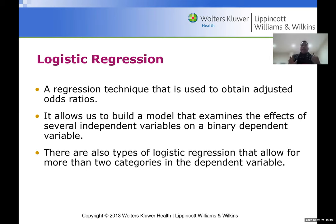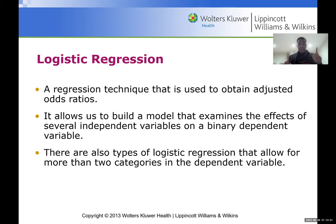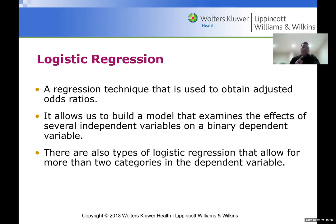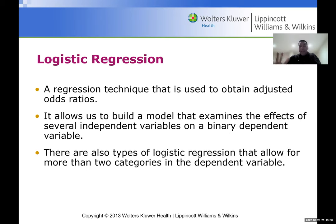Logistic regression is very popular among researchers and PhD nurse scientists because of the simplicity of the modeling. There are other types of logistic regression that allow more than two categories in a dependent variable — those are called multivariate regression, which is definitely a whole different level of regression.